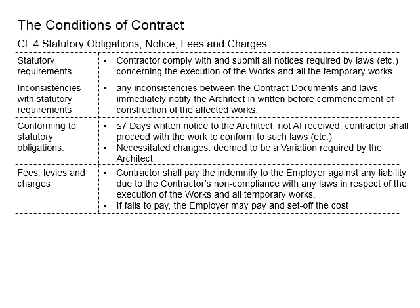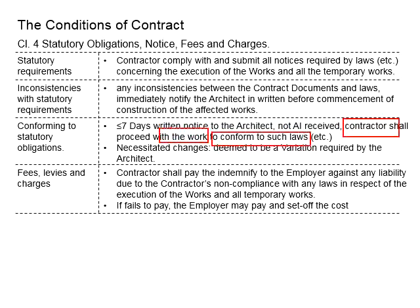Theoretically, the architect must respond to the relevant inquiry and give clear instructions to the contractor. However, if the architect is silent on this within seven days of notice, and no architect's instruction is given, the contractor will have to conform to the law. Conforming to the law will be the top priority.